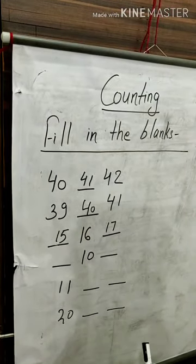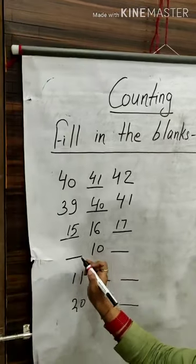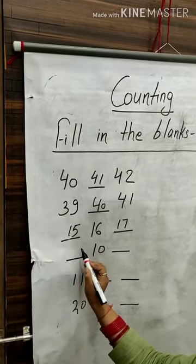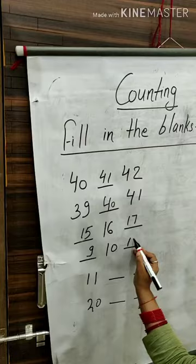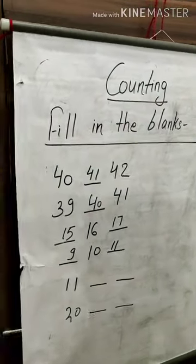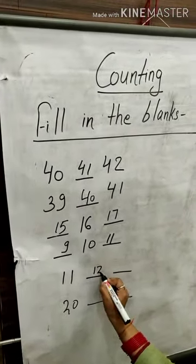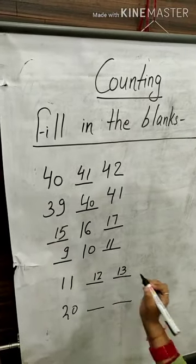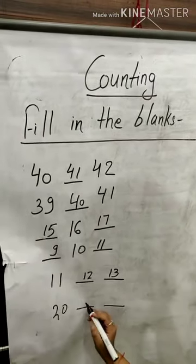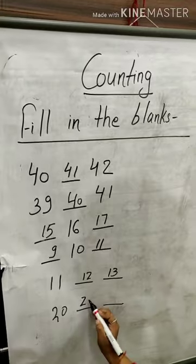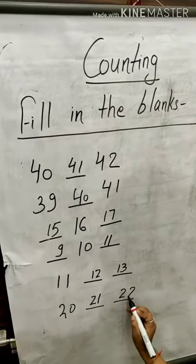Ten. One, two, three, four, five, six, seven, eight, nine, ten and eleven. Eleven, twelve, thirteen, twenty. So, twenty-one and twenty-two.